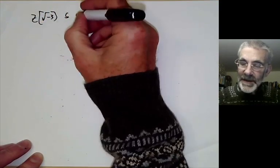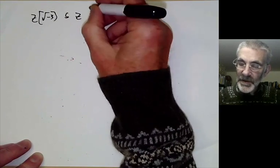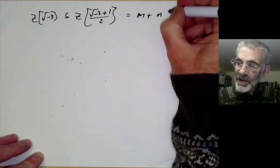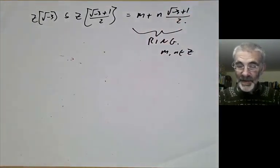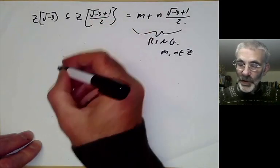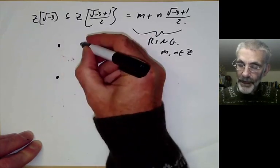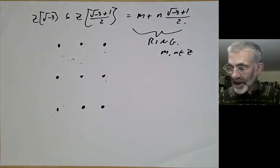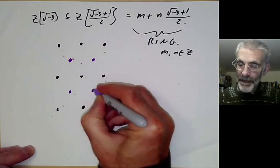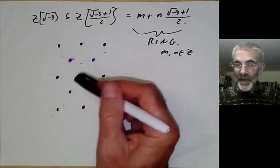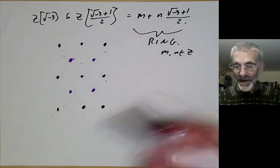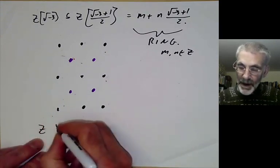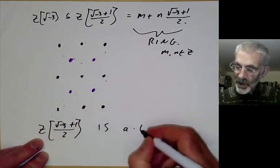We can actually fix this. We take Z[√-3] and embed it in Z[(√-3 + 1)/2], which is all numbers of the form m plus n·(1 + √-3)/2 for m, n integers. It's not difficult to check this is still a ring closed under multiplication. Now this is a unique factorization domain: drawing this ring, we've taken the points of Z[√-3] and added in extra points at the midpoints. These new points, with their unit disks, cover the previously uncovered points, so the whole complex plane is covered and the proof goes through.